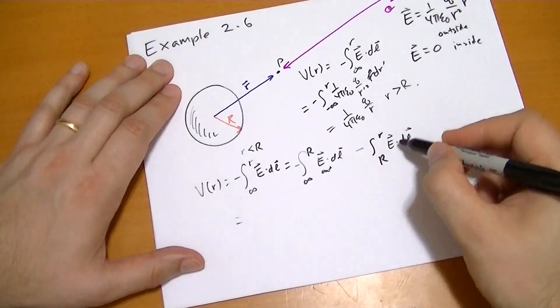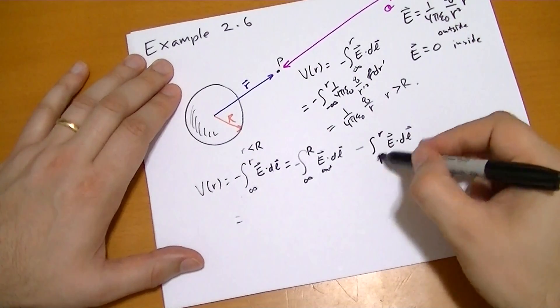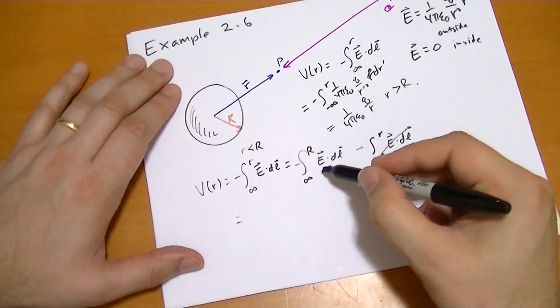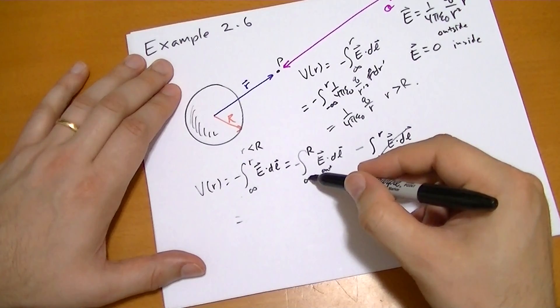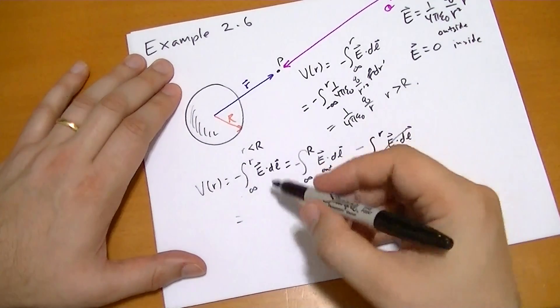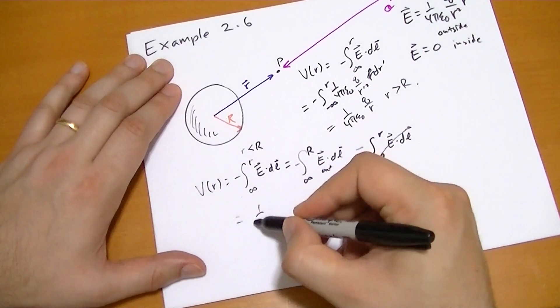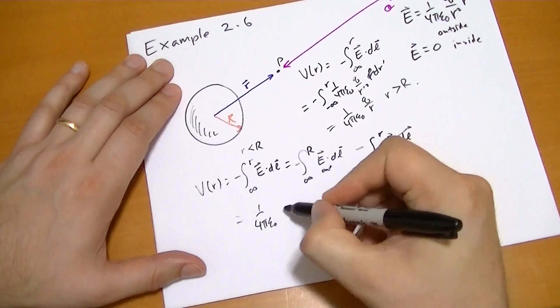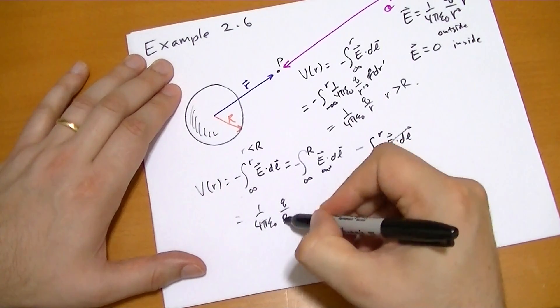Well, inside the sphere, the vector is zero. So that's going to be zero. And outside the sphere, we've already calculated this one, except for we're setting r to capital R. So this is just equal to 1 over 4 pi epsilon naught q over R. And that's it.